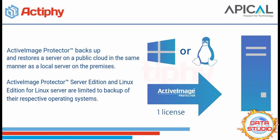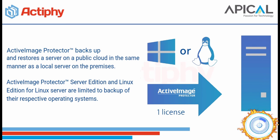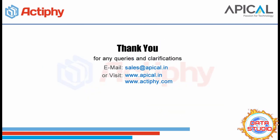Active Image Protector backs up and restores servers on a public cloud in the same manner as a local on-premises server. Active Image Protector Server Edition and Linux Edition for Linux servers are limited to backup of their respective operating systems. One license is required per physical server without limitation to the CPU or the size of the backup source volume. For any queries and clarifications, keep in touch with your Actiphy accounts manager today.